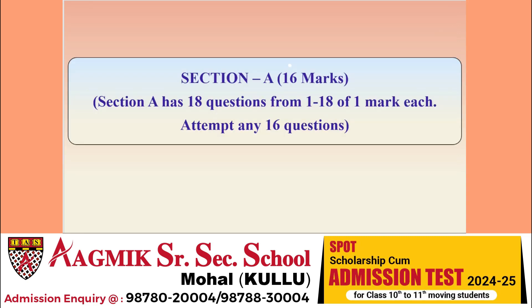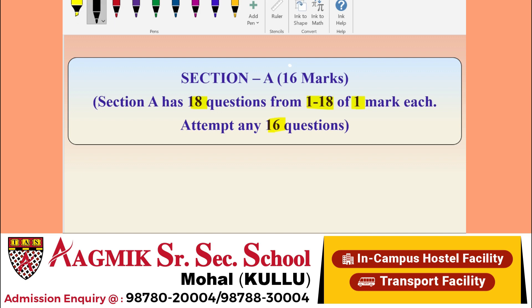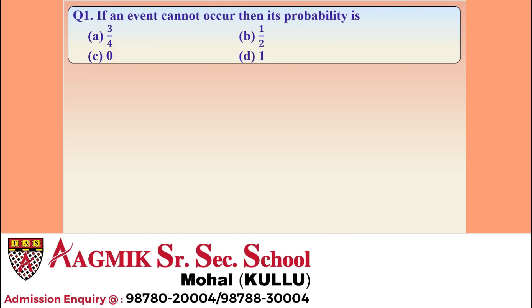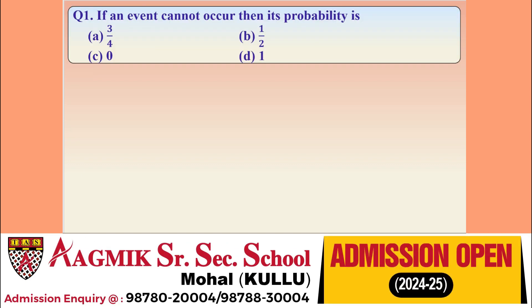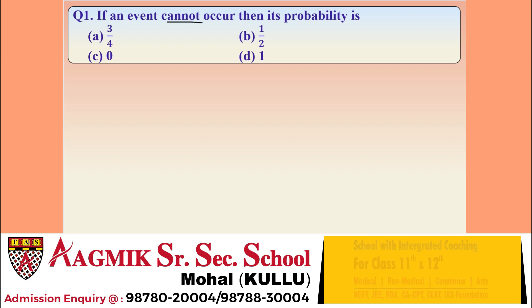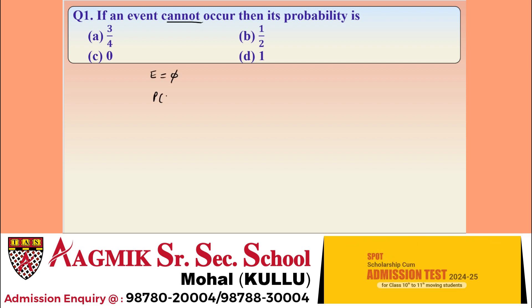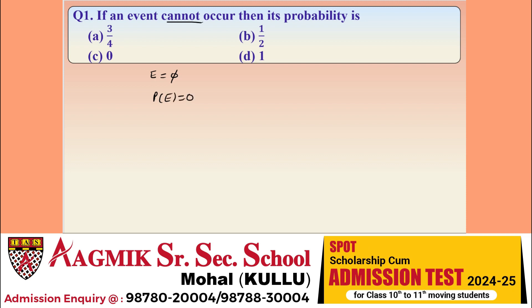Now the first section has 18 questions from 1 to 18, of 1 mark each. Question 1: if an event cannot occur, then its probability is — when an event cannot occur, that means that event is an empty set, so the probability of E would be equal to 0. That means option C is correct.